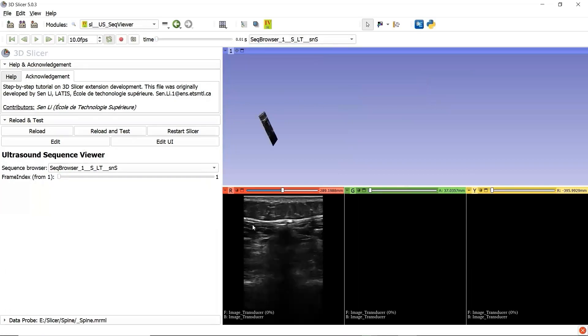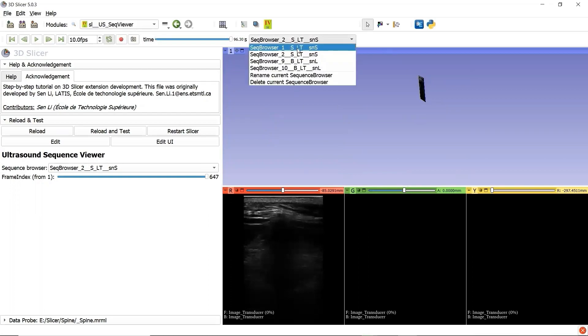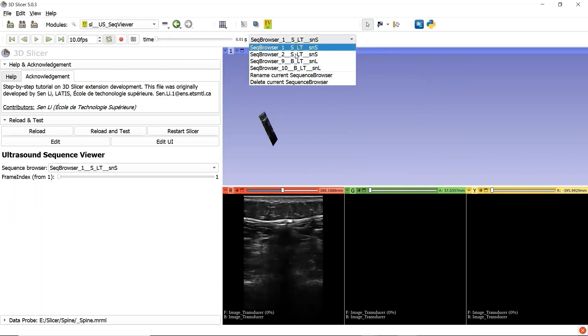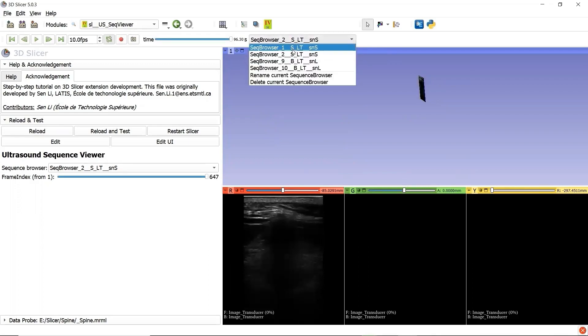not only two viewers are synchronized, but also the ultrasound image can update as we change the active Sequence Browser node from the sequence viewer given by 3D slicer. We fixed the bug.